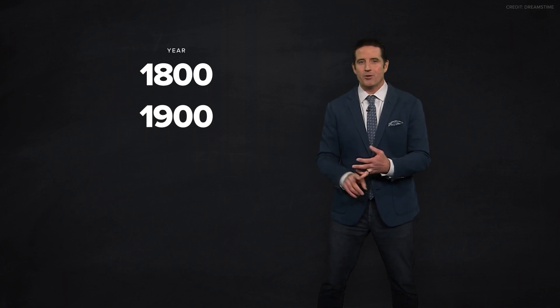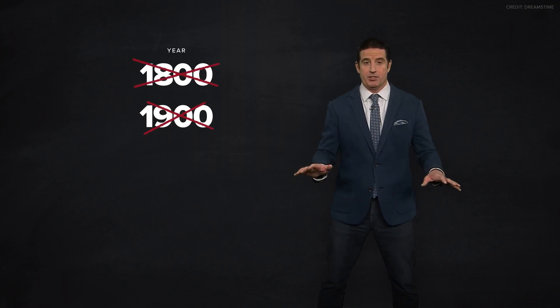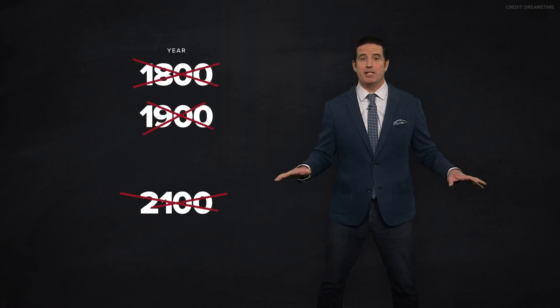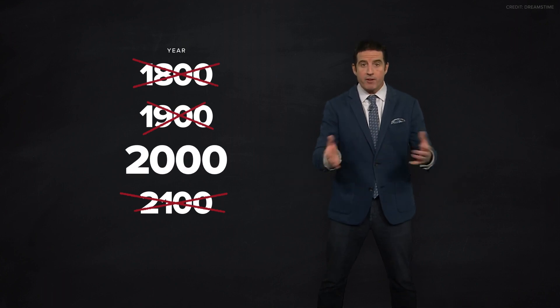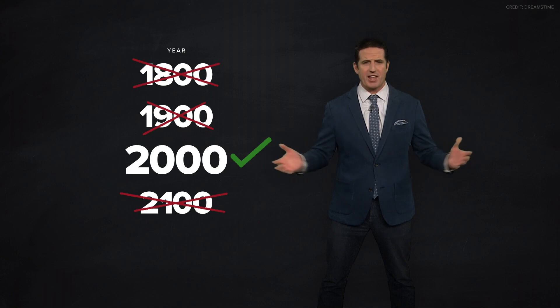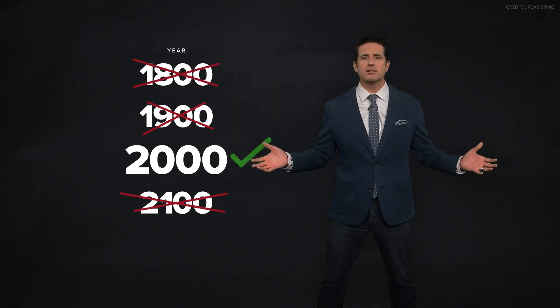Unless the century year can be divided by 400. In other words, the century years 1800 and 1900 were not leap years, and the year 2100 will also not be a leap year. But the year 2000, you may remember, was a leap year. Does that all make sense?